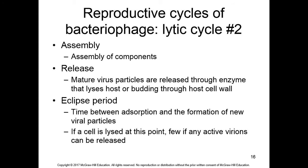Once viral proteins and structures are synthesized inside the bacterial cell, the fourth step — assembly — begins. The capsid proteins unite together to make capsids, and the bacteriophage nucleic acid combines with them. Now a number of complete bacteriophages are ready inside the bacterial cytoplasm. The mature virus particles are then released through enzymes that lyse the host cell, or by budding through the host cell membrane.